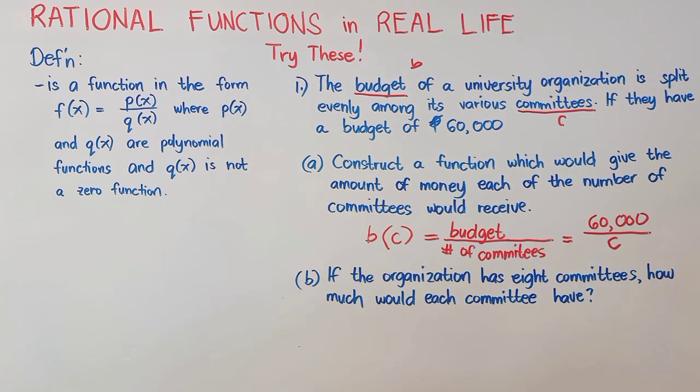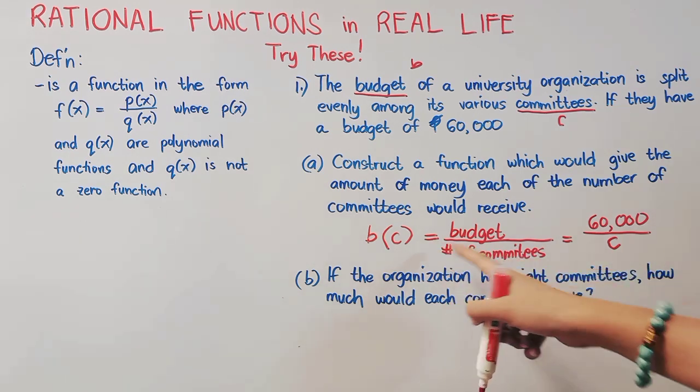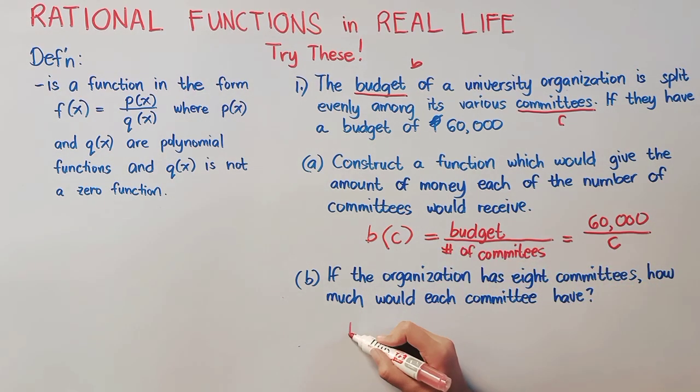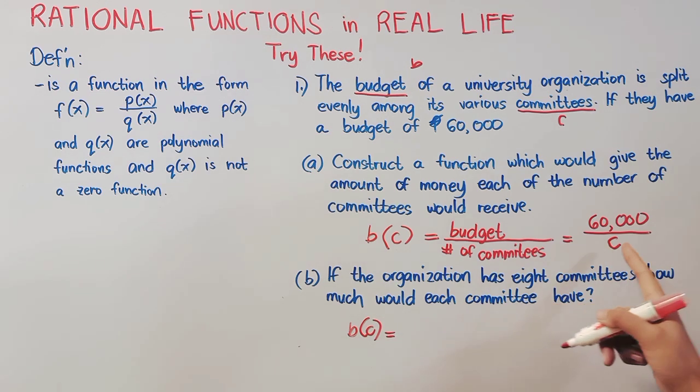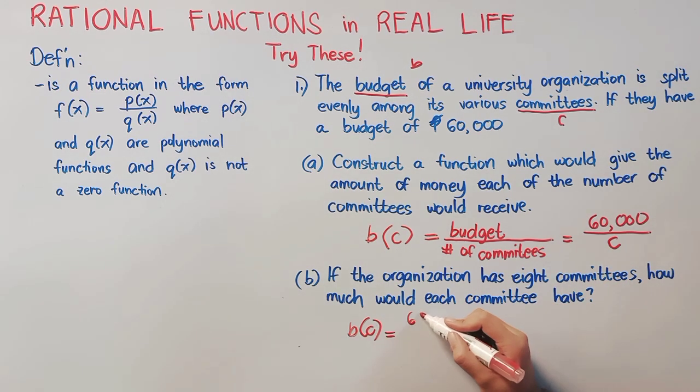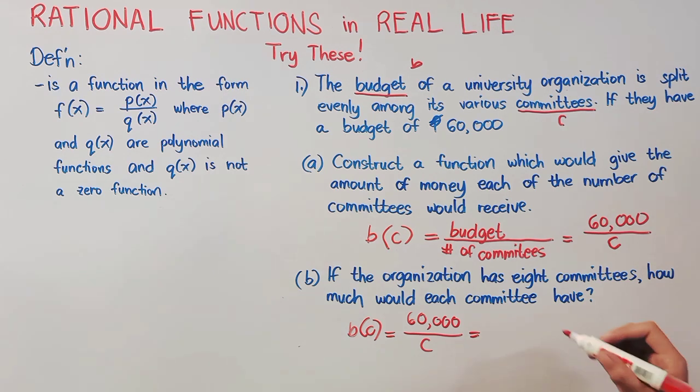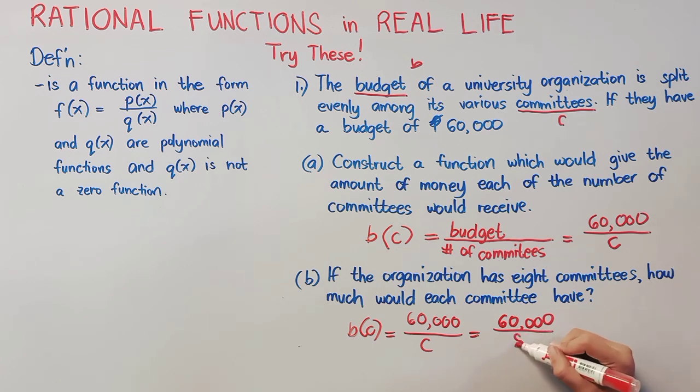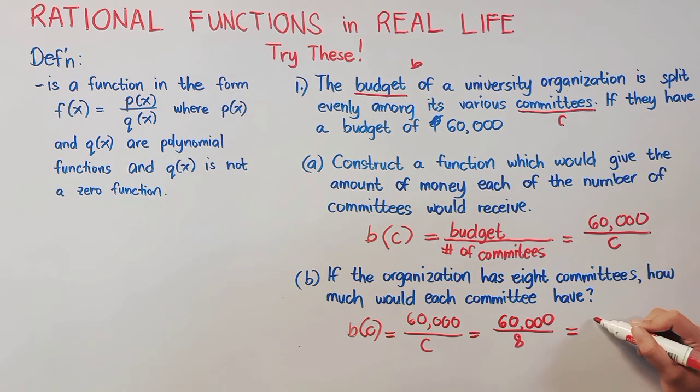Let's now have B. If the organization has 8 committees, how much would each committee have? So, we will be using our function here in letter A. We have 60,000 over C. Now, our C here, or the number of committees, is 8. So, we will simply replace C with 8. So, 60,000 divided by 8, that will give us 7,500. Therefore, each committee will receive 7,500 pesos each.